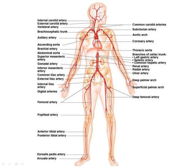The celiac trunk and mesenteric arteries feed the digestive organs. The renal arteries go to the kidneys, the gonadal arteries to the gonads, and the iliac arteries split off the bottom to feed the pelvis and legs. The femoral and popliteal arteries continue into the legs. The subclavians become the brachial, radial, and ulnar arteries in the arms.